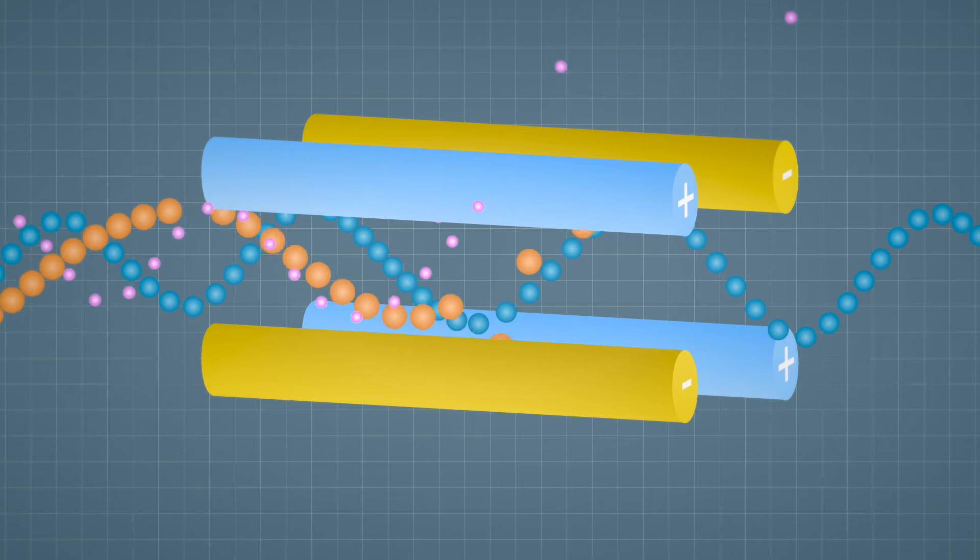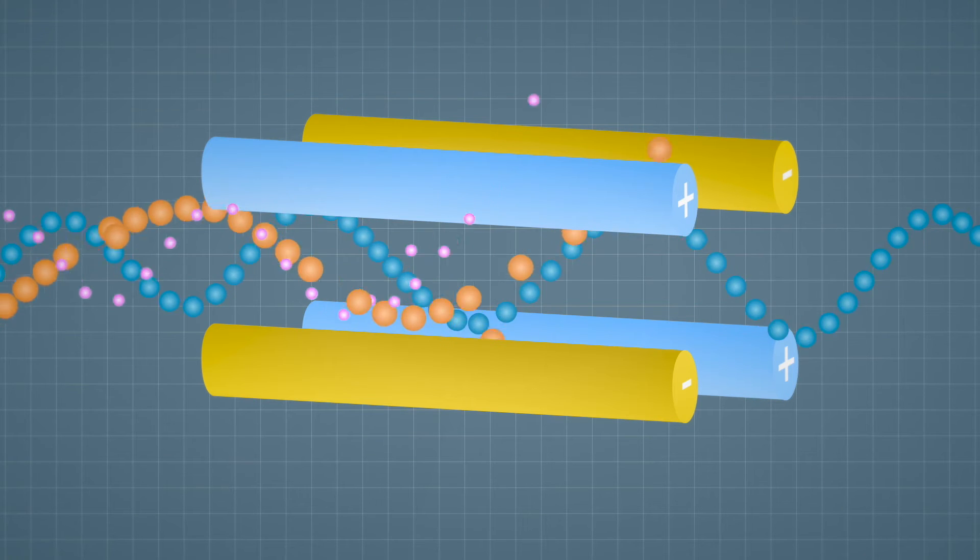The ion motion within a quadrupole is relatively complex, so we won't go into details here. It's possible to plot ratios of the RF and DC voltages for which the ion motion does not extend beyond the inscribed radius of the rods in the X and Y axis. In other words, we can derive ratios where the ion motion is stable.